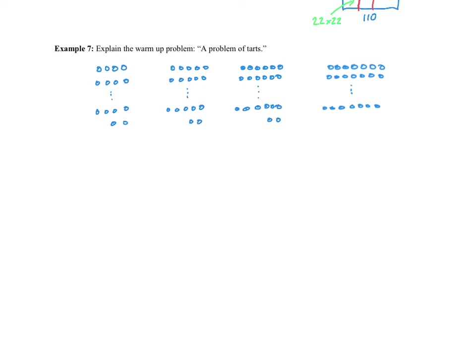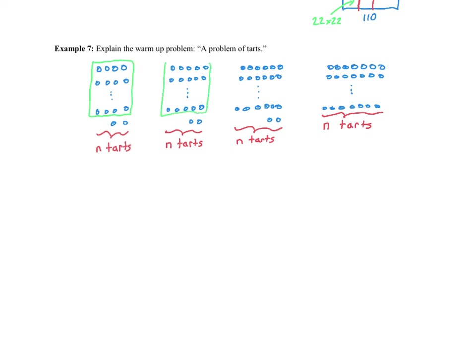Let's say the display has n tarts. Looking at our picture, the number n minus 2 fits evenly into rows of 4, 5, and 6 — so n − 2 is a common multiple of 4, 5, and 6. We want the smallest that could be, i.e., the least common multiple.